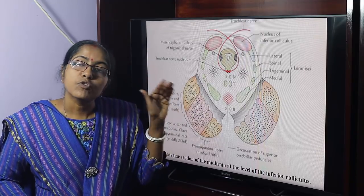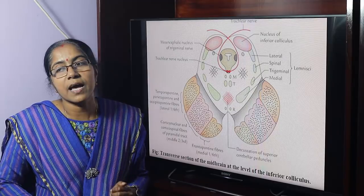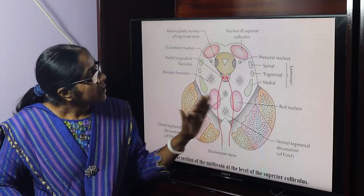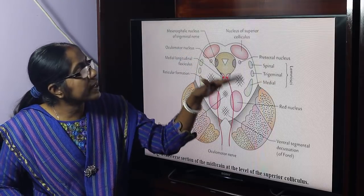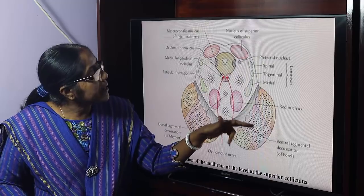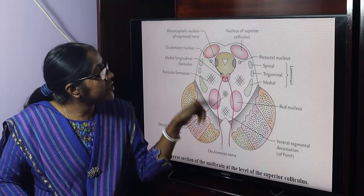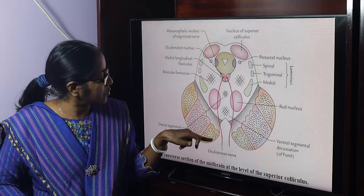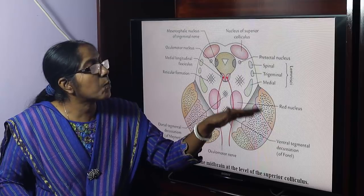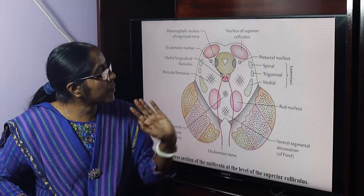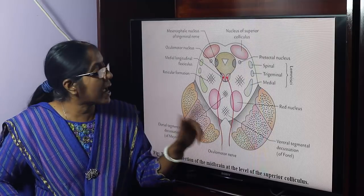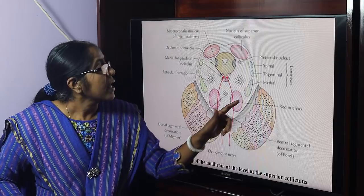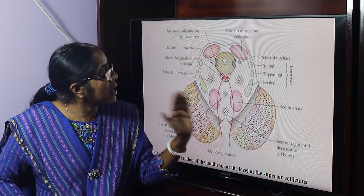At the level of the superior colliculus, the transverse section shows the cerebral aqueduct and tegmentum. The crus cerebri arrangement remains: medial one-sixth occupied by frontopontine fibers, lateral one-sixth by parietopontine, temporopontine and occipitopontine fibers, and middle two-thirds by corticonuclear and corticospinal fibers. The substantia nigra contains neuromelanin, which is why this area is darker in color.